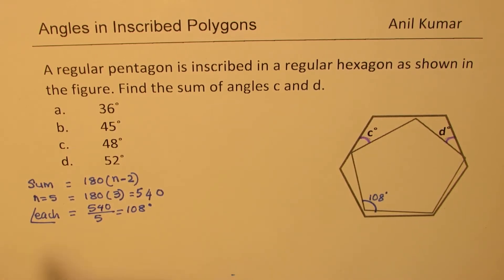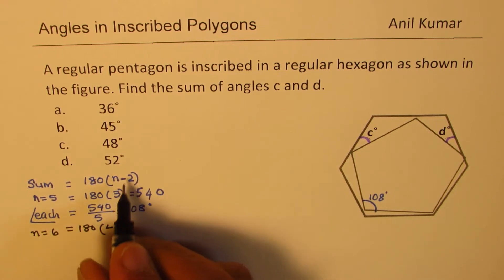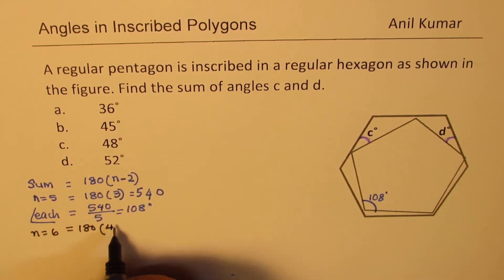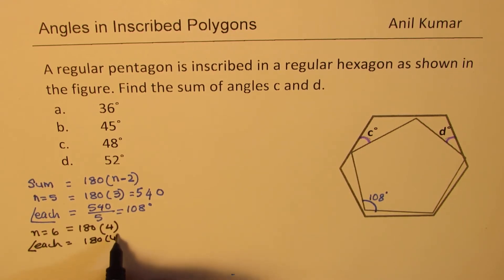For a hexagon where N is equals to 6, in that case it would be 180 degrees times 6 minus 2, which is 4. And each angle in this case will be 180 degrees times 4 divided by 6. So when you do that, that goes 30, and so you get 30 times 4 as 120 degrees.